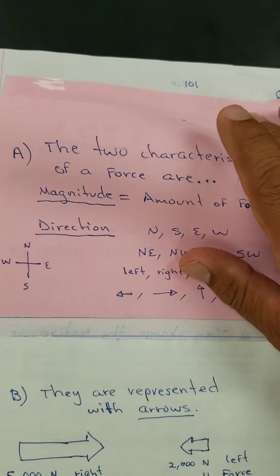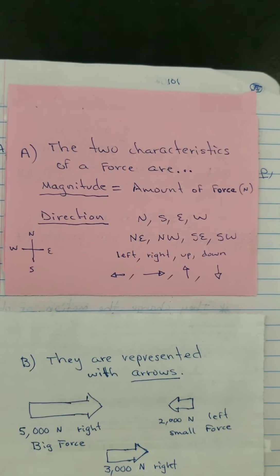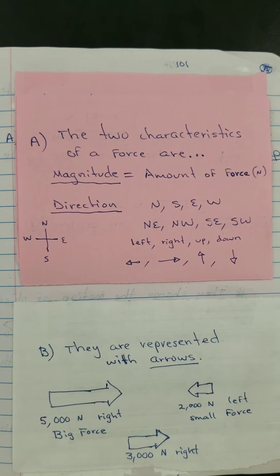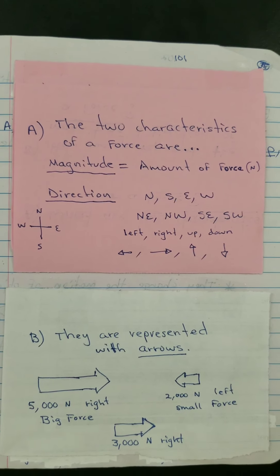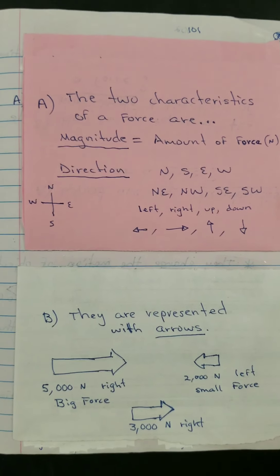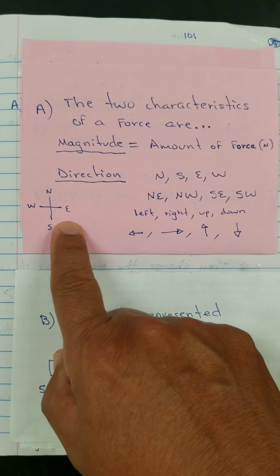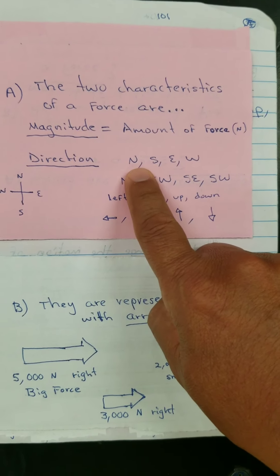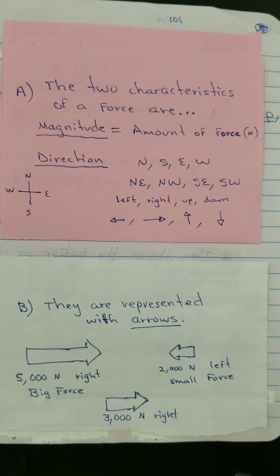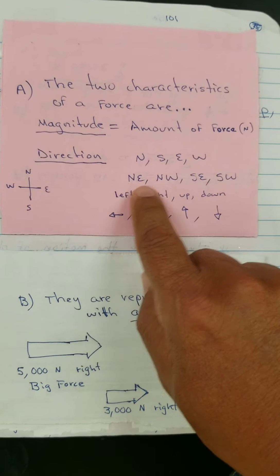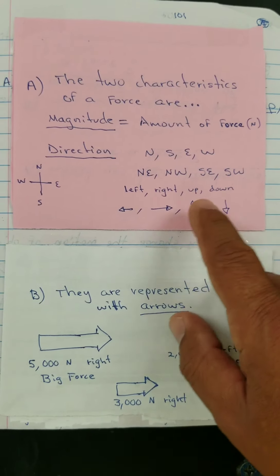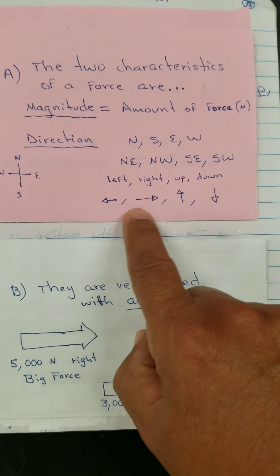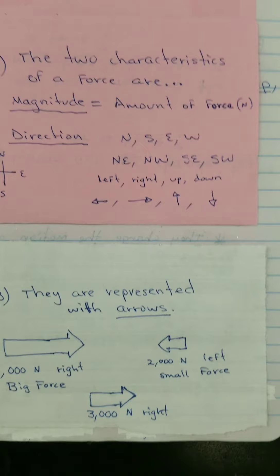Two characteristics of a force — I put this on the top of your foldable because it's a big answer. The two characteristics of forces are magnitude and direction. Magnitude tells you how much force is used; it's measured in Newtons. For direction, if you see a compass in one of your questions, use compass directions like north, south, east, west, northeast, northwest, etc. If there's no compass, you can say left, right, up, down, or indicate direction with arrows.